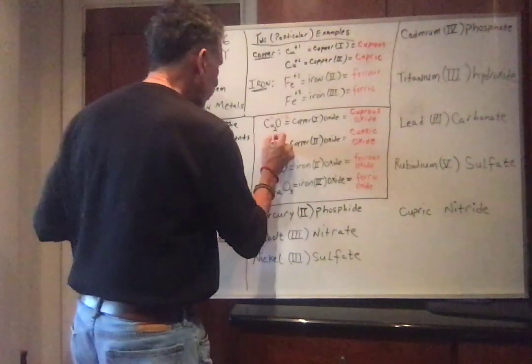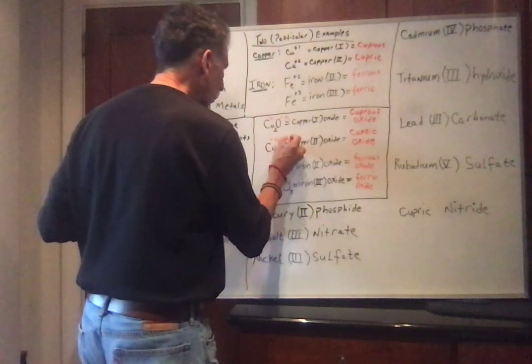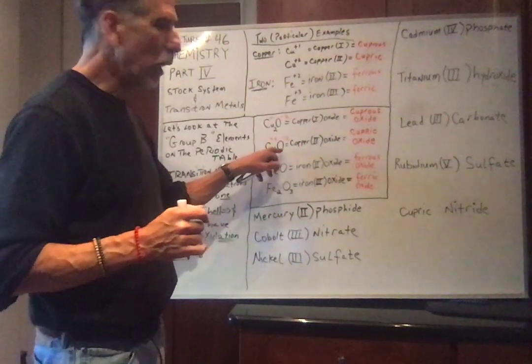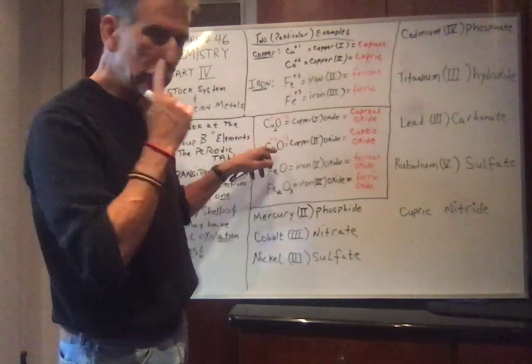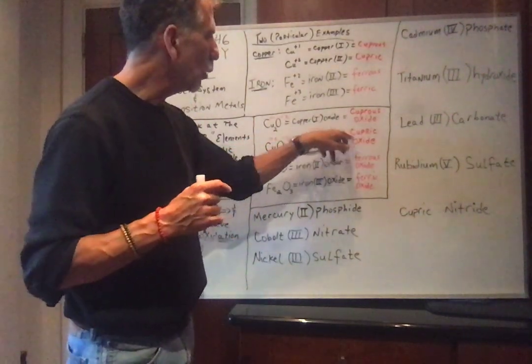CuO, copper is in the plus 2 state, oxygen is in the minus 2 state, one copper with one oxygen, so that's copper 2 oxide or cupric oxide.